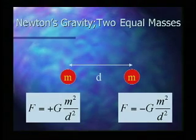Let's recall Newton's gravity in its simplest manifestation. Let's suppose we have two equal masses separated by some distance d. Then Isaac Newton told us that the force between them will be inversely proportional to the square of their distance and proportional to the product of their masses.